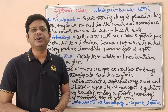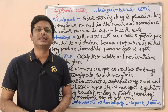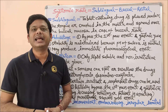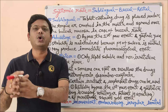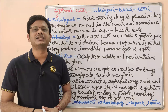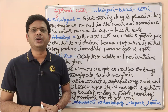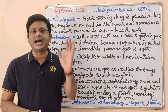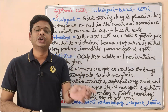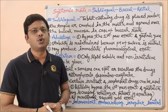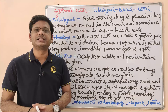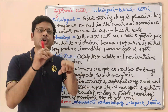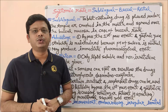What is the meaning of systemic route? As we have discussed in our earlier video, a route which is intended to be absorbed in the blood is simply known as a systemic route. There are so many ways by which the drug moves from the site of administration to the systemic circulation.